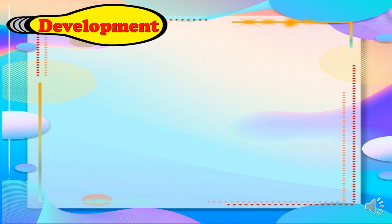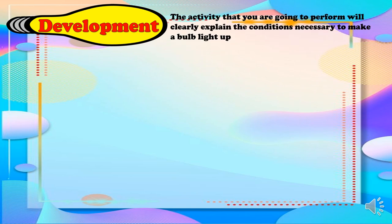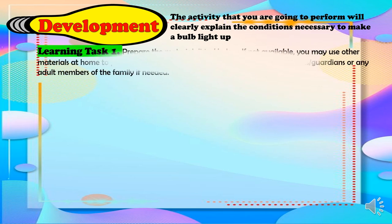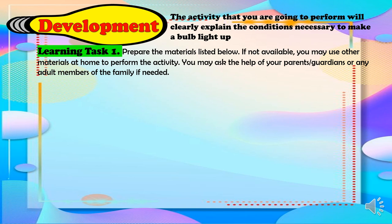For the development, the activity that you are going to perform will clearly explain the conditions necessary to make the bulb light. For learning task 1, prepare the materials listed below. If not available, you may use other materials at home to perform the activity.